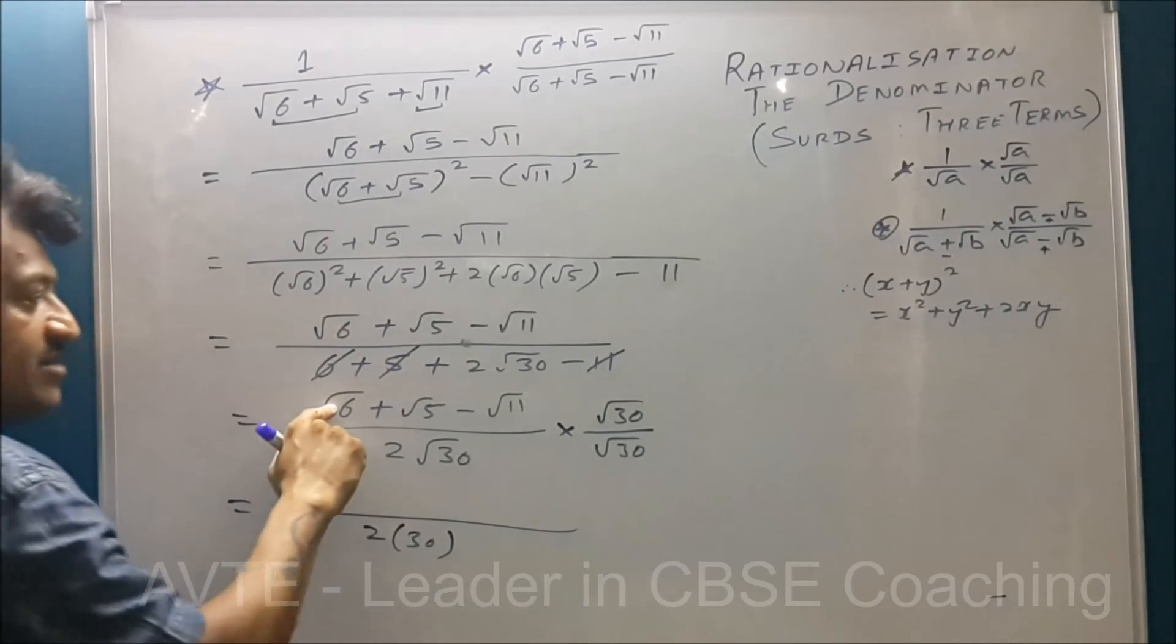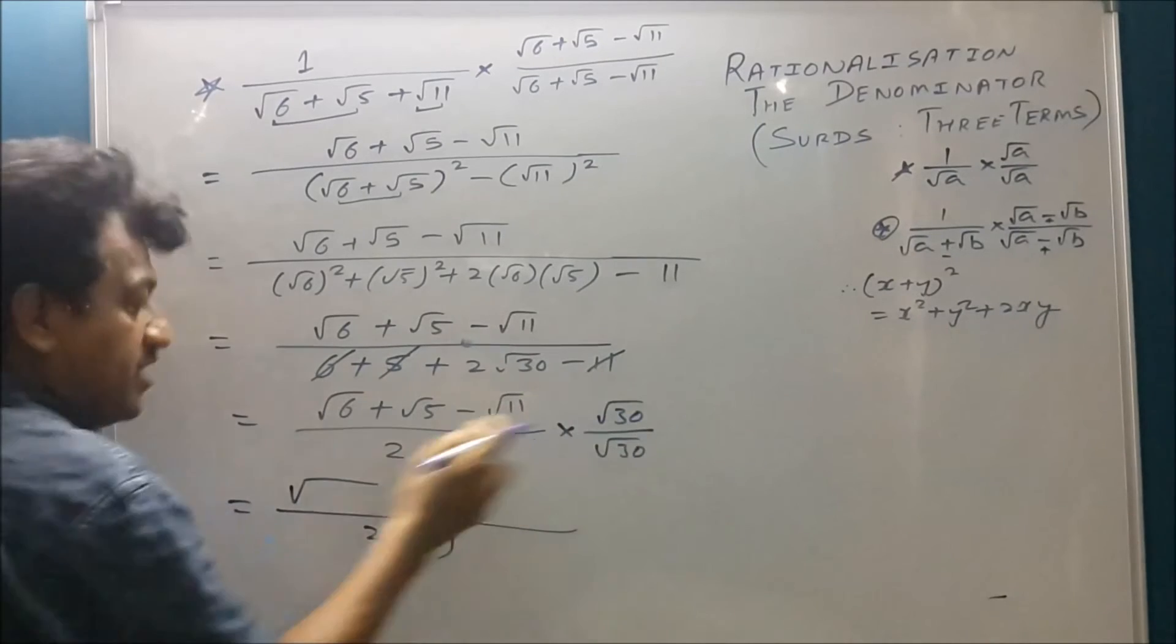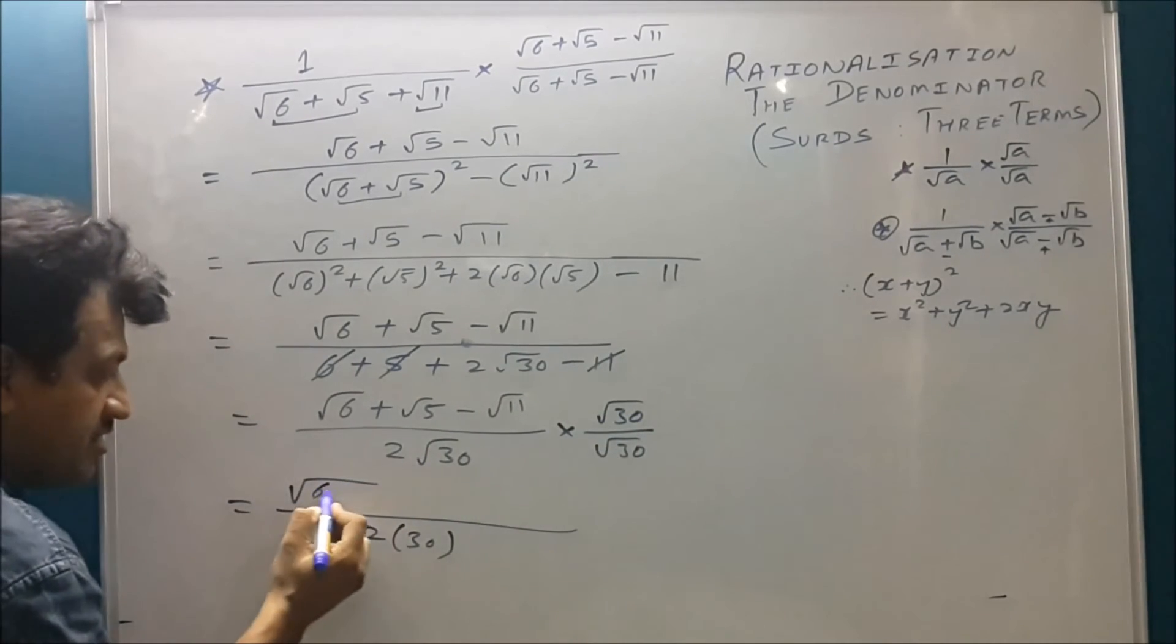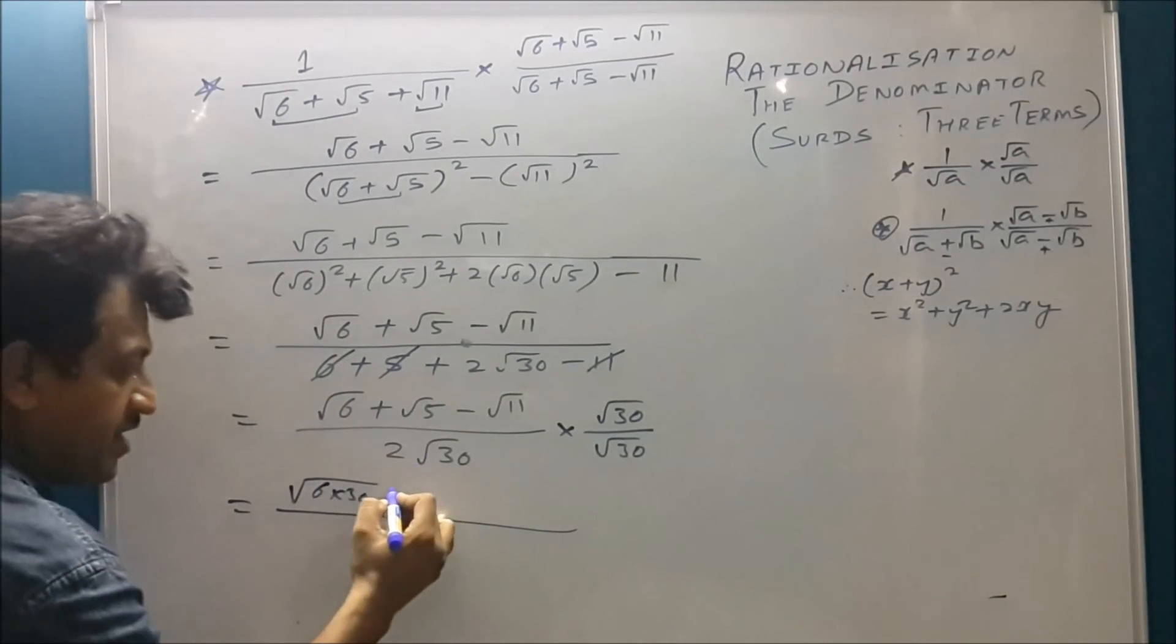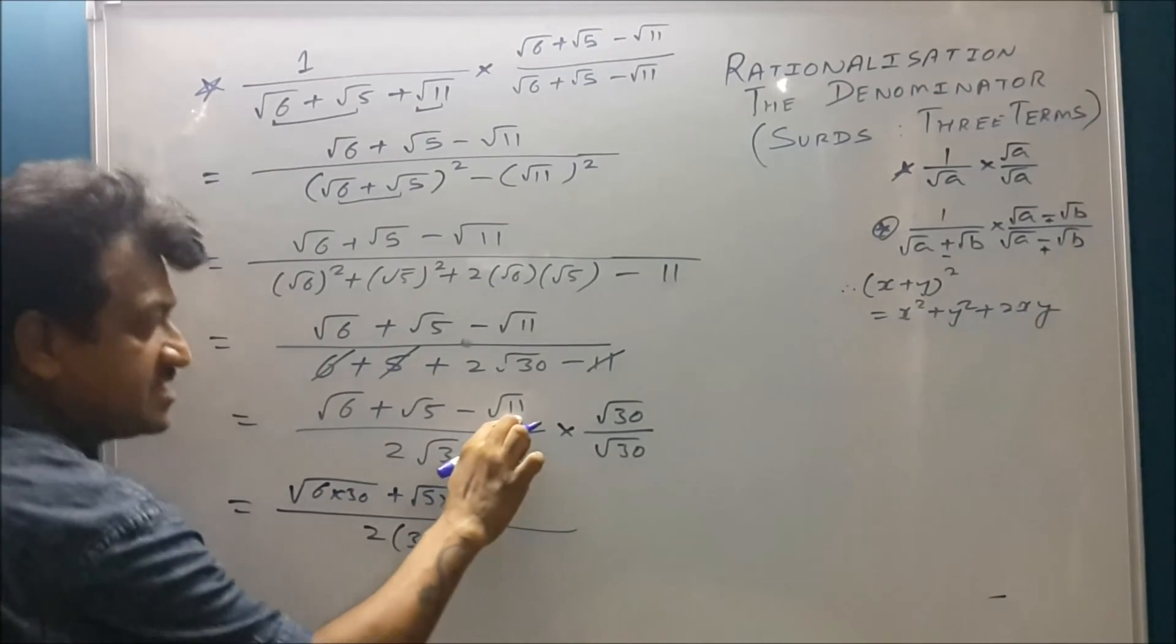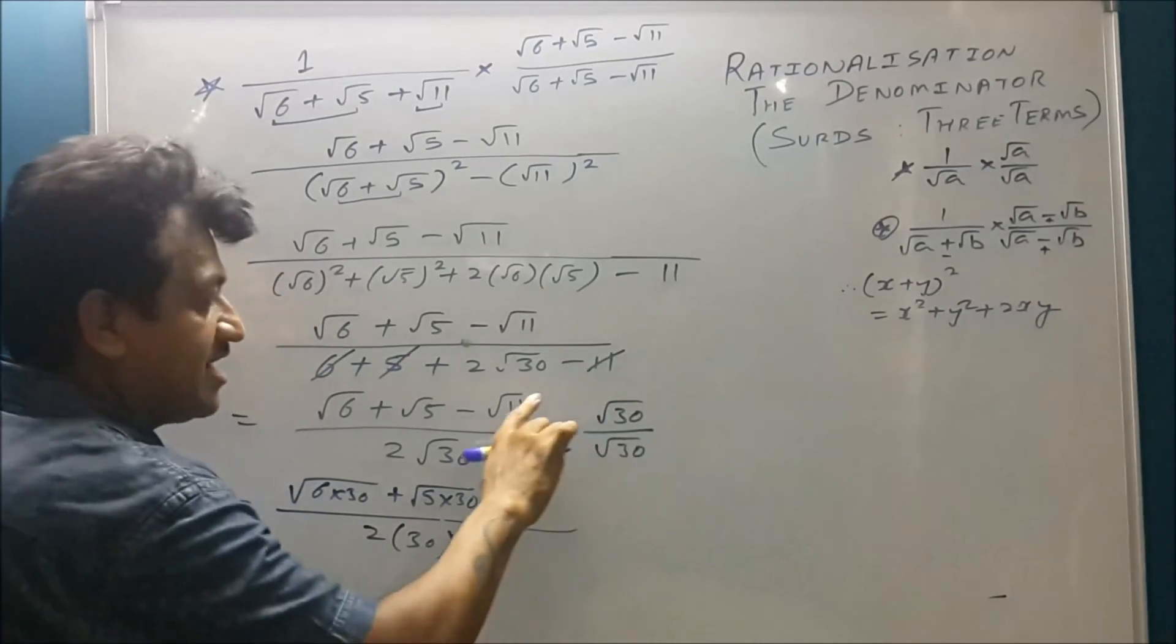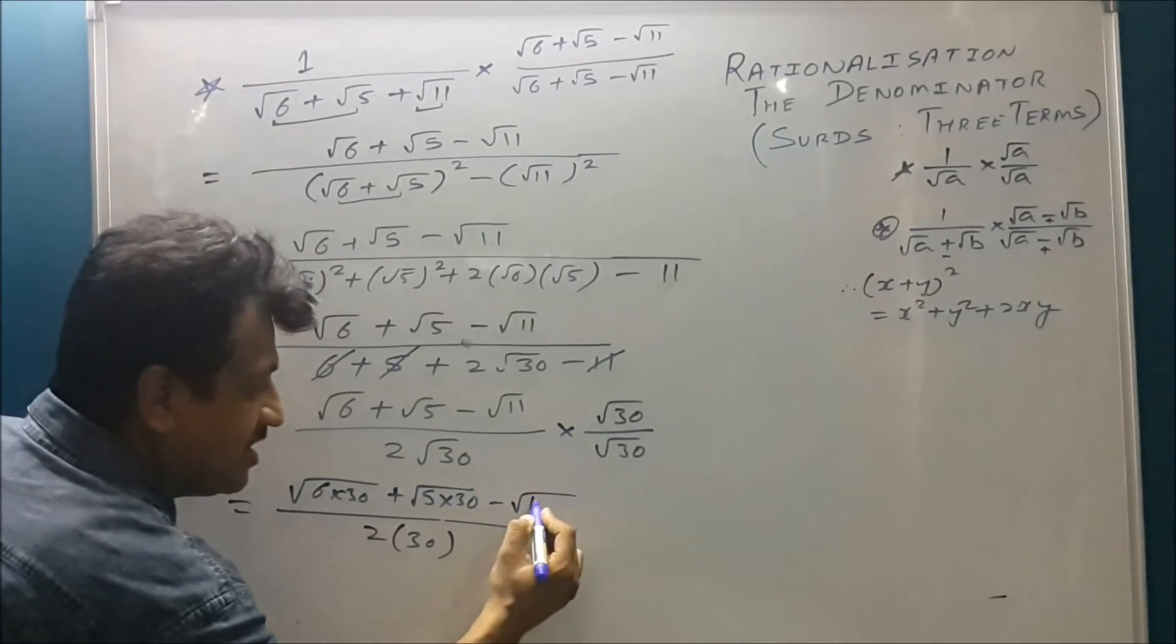So now you have to modify root 6 into root 30. Write down 6 into 30 plus 5 into 30 and here it's 11 and here the factors are 2, 3, 5. So you directly multiply them. Otherwise you can write 11 into 30.